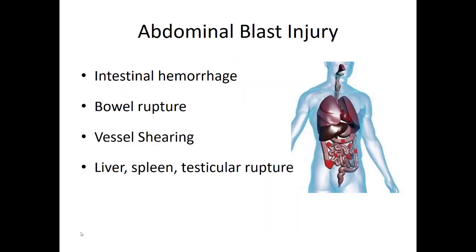Another hollow organ very prone to injury is the abdomen. Common injuries include intestinal hemorrhage — just like the lungs, the intestine is a hollow tube and surrounding vessels can rupture and cause bleeding. The bowel itself can rupture, and many vessels supplying the gut can shear depending on the angle and direction of force. The solid organs — liver, spleen, and even the testicles — can also rupture depending on the force of the blast wave, so pretty severe abdominal injuries can occur.